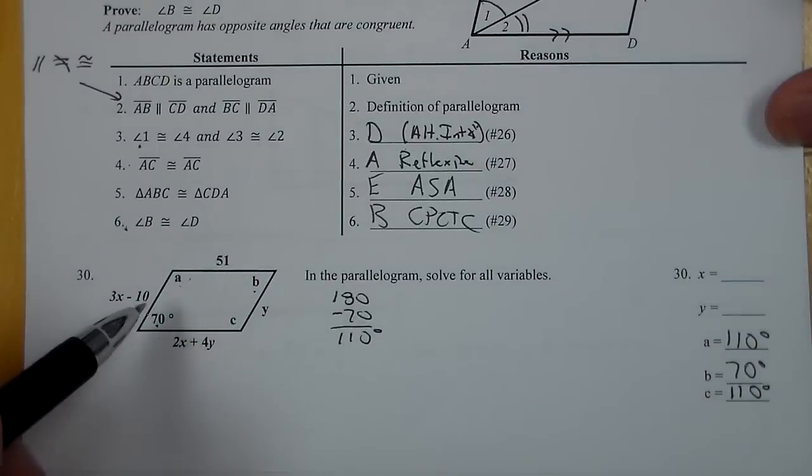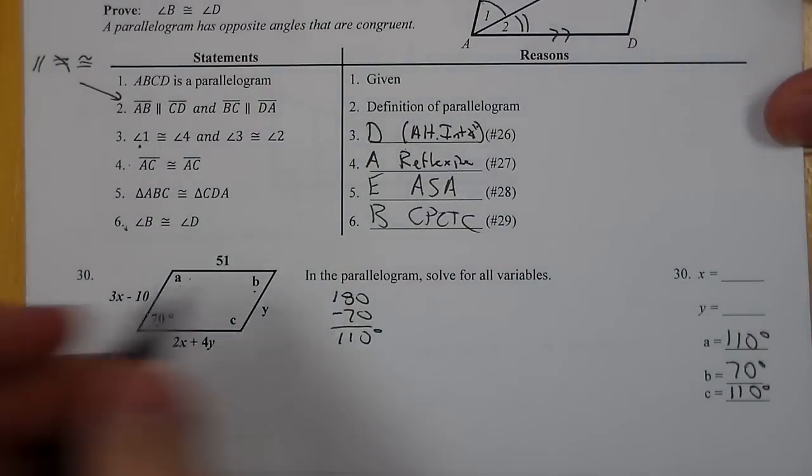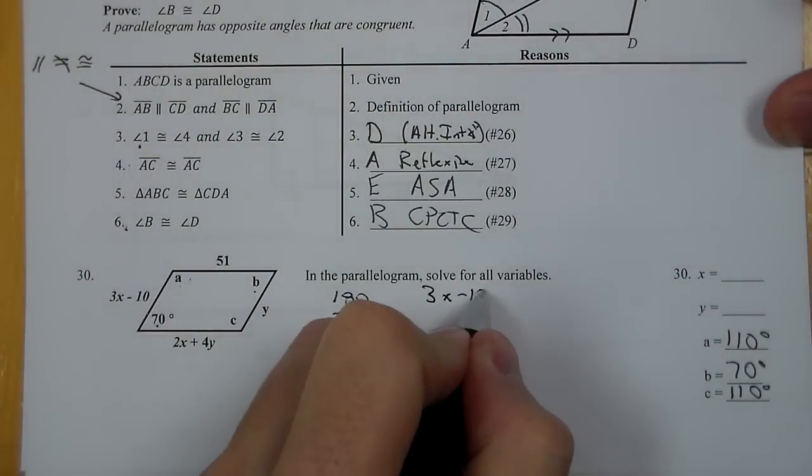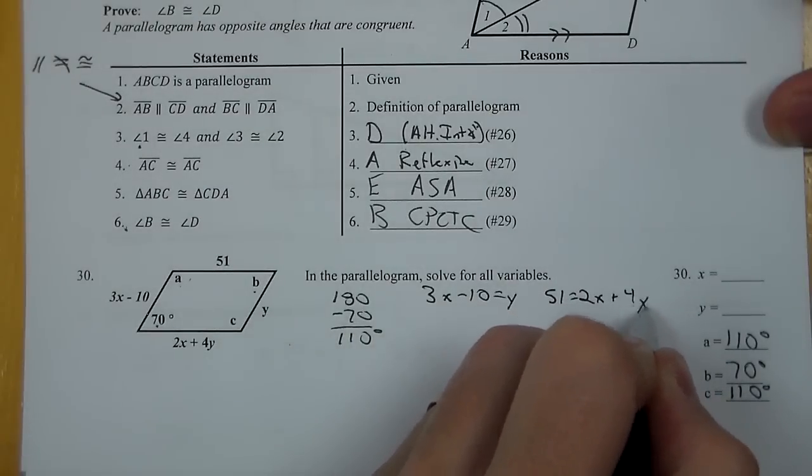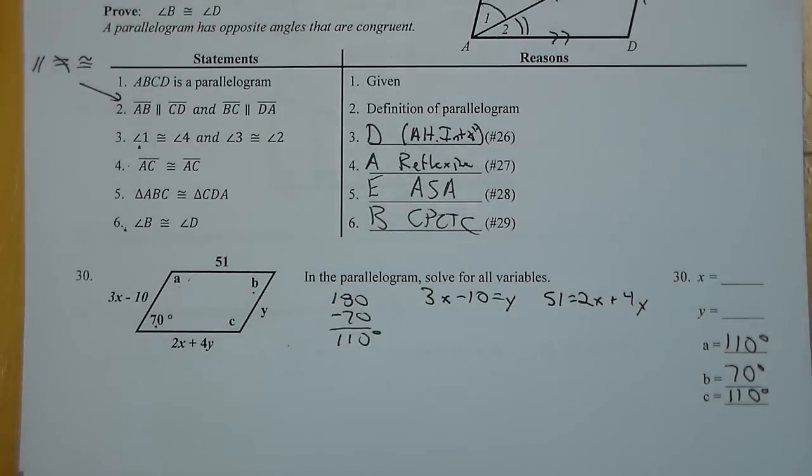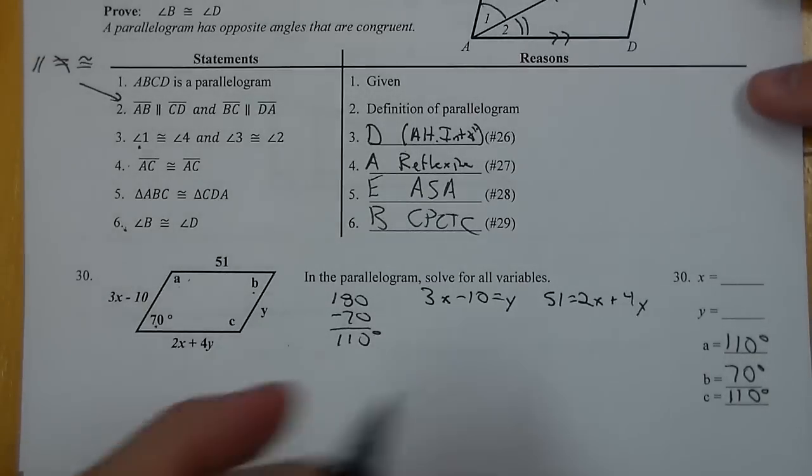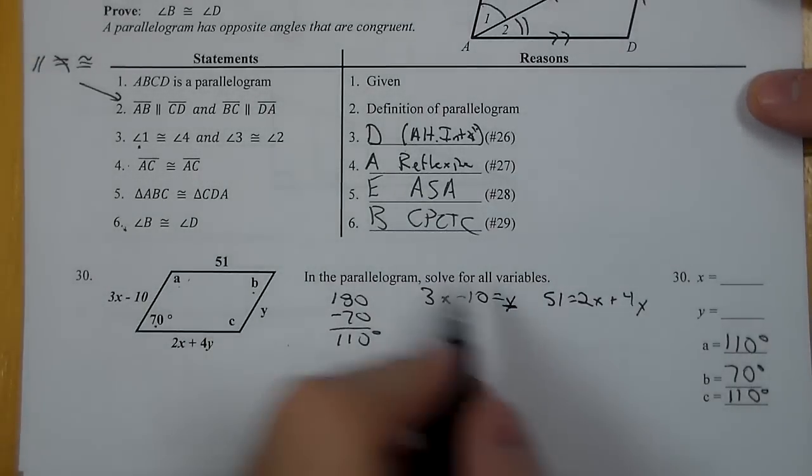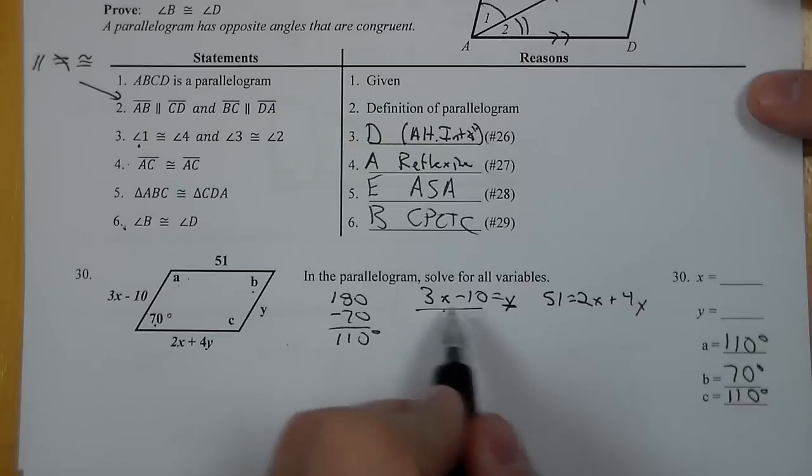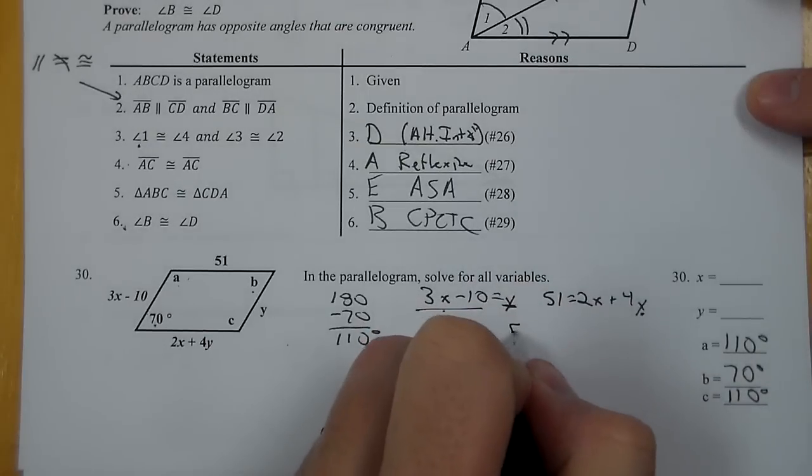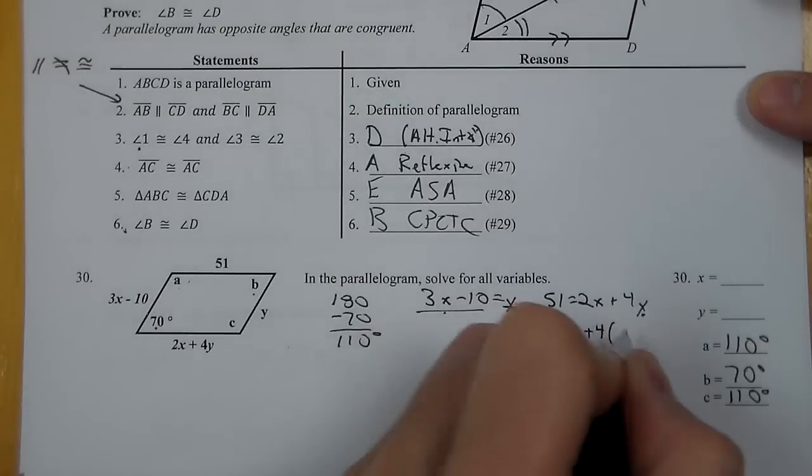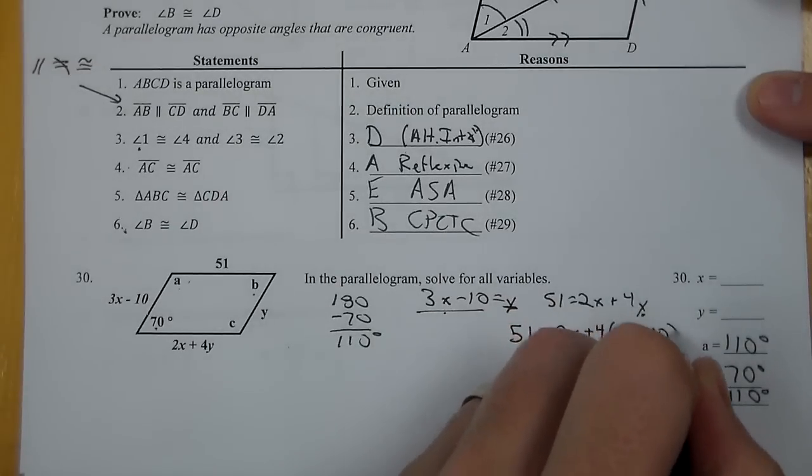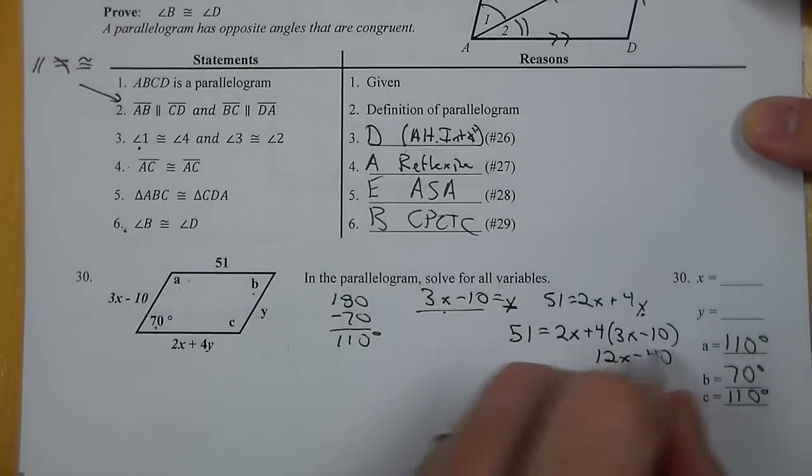Now we look at our sides. So opposite sides are congruent. It tells me 3x minus 10 equals y and 51 equals 2x plus 4y. So we don't have just equations with x or y by themselves, and yet we need to kind of solve. I like to use substitution. So I'm going to take this term y here, this term y here is equal to 3x minus 10, and substitute it into the other equation. 51 equals 2x plus 4 times 3x minus 10. This becomes 12x minus 40.